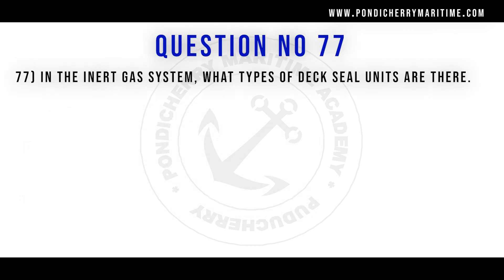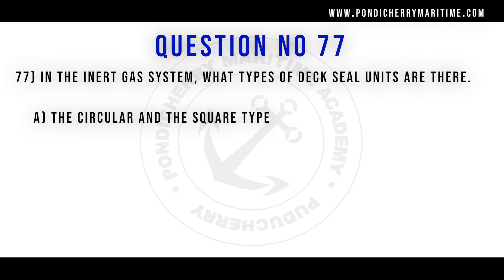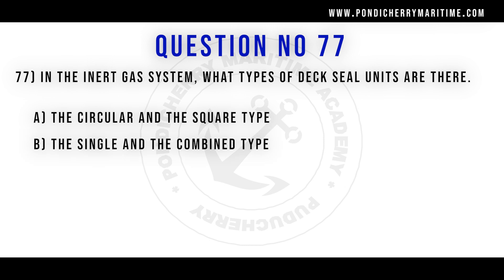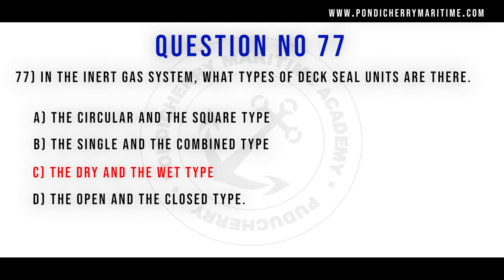Question 77: In the inert gas system, what types of deck seal units are there? Option A: the circular and the square type. Option B: the single and the combined type. Option C: the dry and the wet type. Option D: the open and the closed type. Correct answer is Option C: the dry and the wet type.